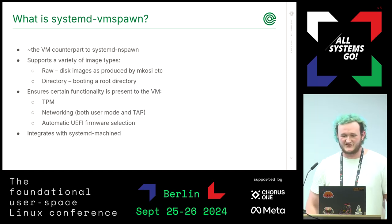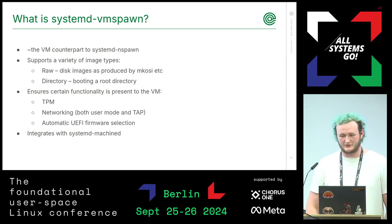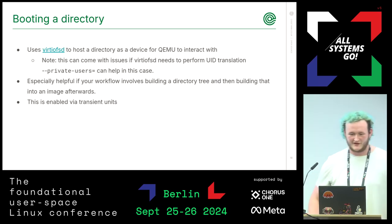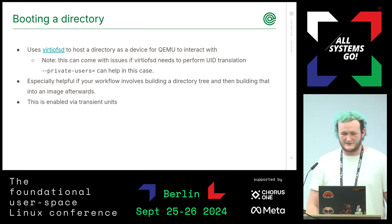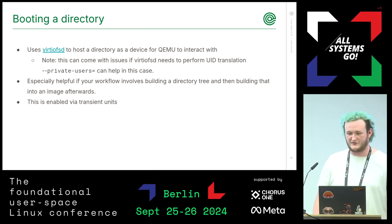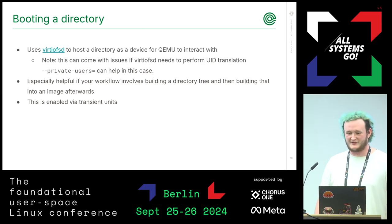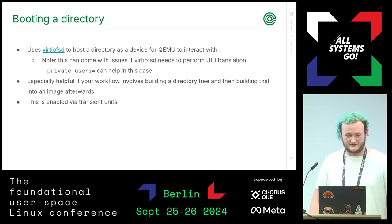The outcome of this was systemd-vmspawn, a new systemd tool which acts as a wrapper for QEMU while providing rich integrations with external tools and exposing an interface that matches systemd-nspawn where possible. A feature vmspawn shares with MkOSI QEMU is the ability to start a VM from a root directory, leveraging virtiofsd to host the directory and provide a block device for QEMU. One quirk of this approach is that user namespacing issues can occur, so the --private-users flag was added to prevent these issues.